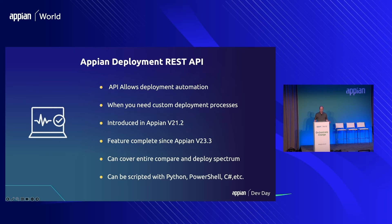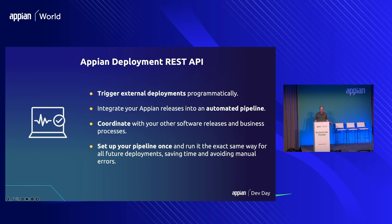The Appian REST deployment API was introduced in version 21.2 of the Appian platform a few years back, with the main intent of allowing DevOps processes to automate deployment pipelines. It's been pretty much feature-complete since last year — in 23.3 they released an almost end-to-end toolset for exporting applications, capturing assets, and importing them into an upstream environment. The REST API can be scripted with your favorite languages — PowerShell, Python, Bash, C#, Go — and you can trigger external Appian deployments programmatically from Azure DevOps pipelines, coordinate with other software release processes, and set it up once.